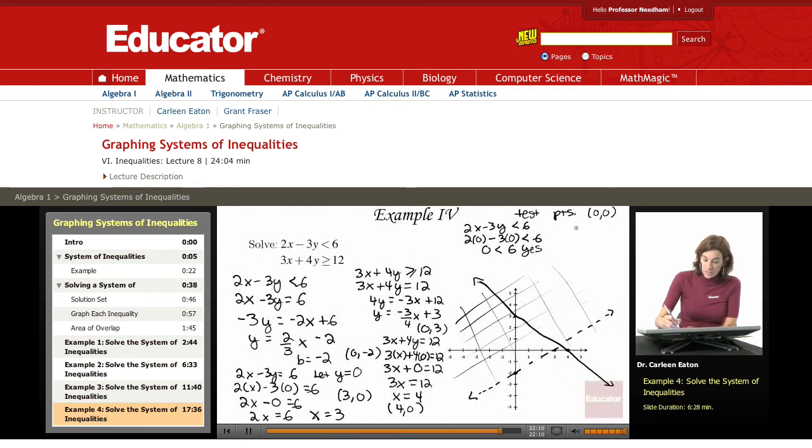Second inequality, 3x plus 4y is greater than or equal to 12. That's, again, test point is 0, 0. So 3 times 0 plus 4 times 0 is greater than or equal to 12. Is 0 greater than or equal to 12? No.